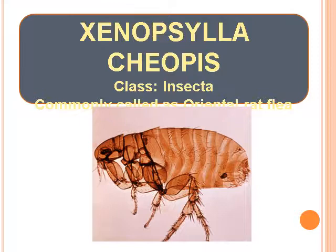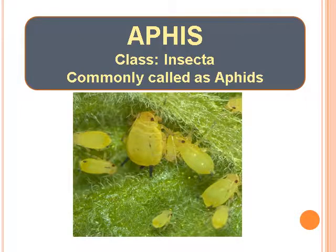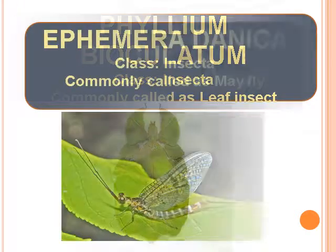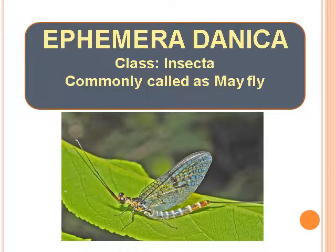Xenopsylla Cheopis — Class Insecta, commonly called as Oriental Rat Flea. Aphis — Class Insecta, commonly called as Aphis. Phyllium Bioculatum — Class Insecta, commonly called as Leaf Insect.